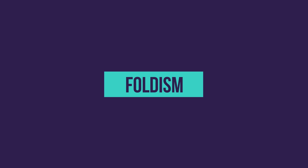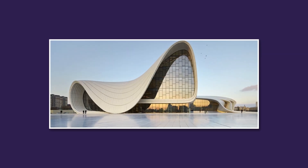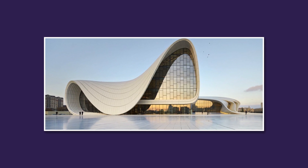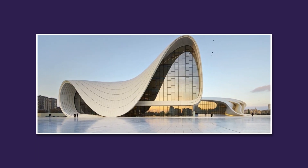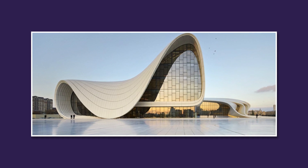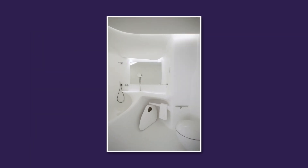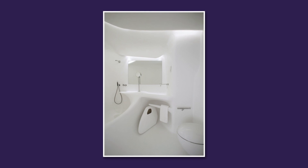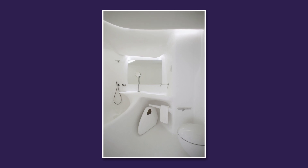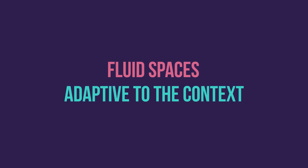Foldism is the first subsidiary style — a simple idea backed by a lot of science and engineering. It is about creating complexity without the use of multiple elements. The designers use the same surface to express the different articulations and features of their designs. This approach creates very fluid spaces that are adaptive to the context and to their internal requirements.